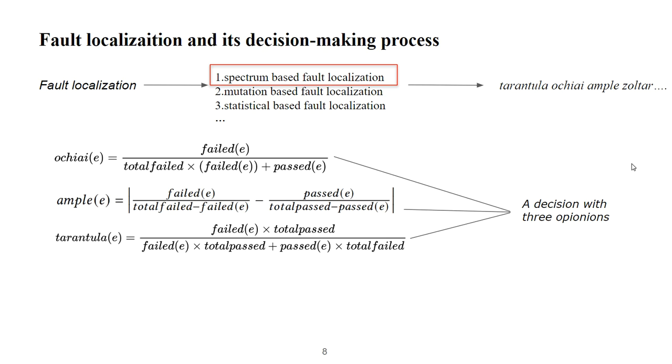In this way, it comes to the uncertain decision-making theory. Various formulas in fault localization are similar to decision-makers, the DM, because each one provides a new perspective on the question. We can compromise our opinion from every DM to get the final result.